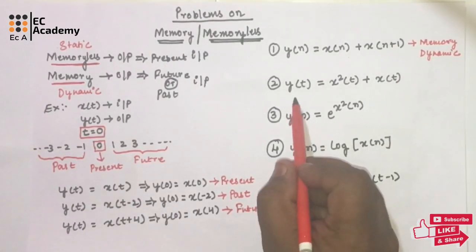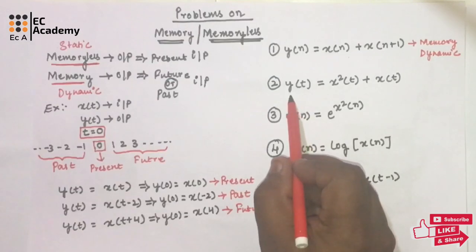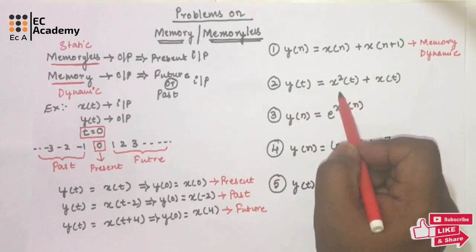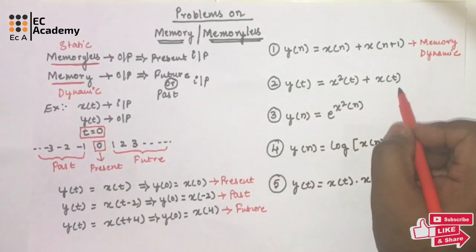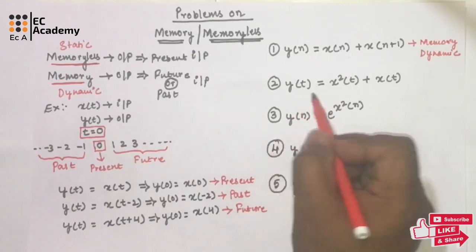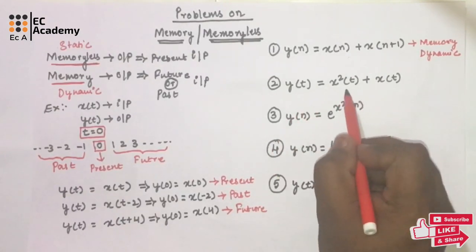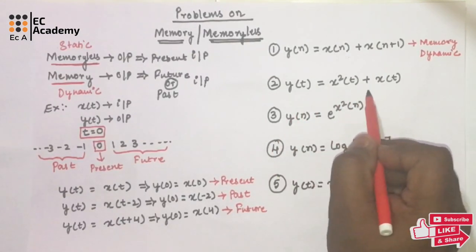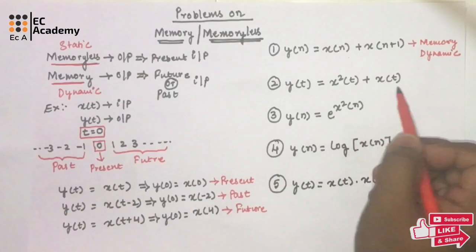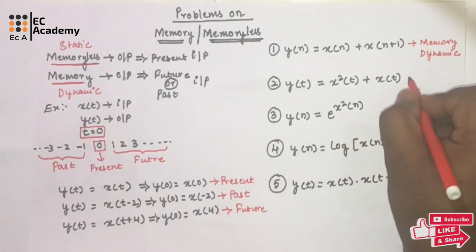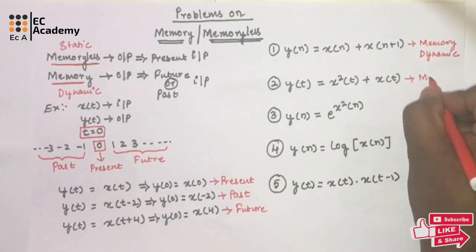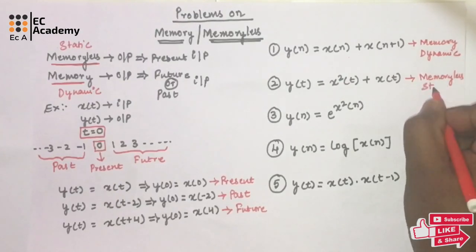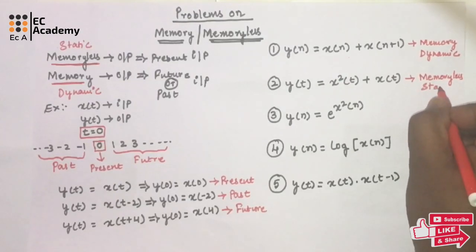Consider the second problem: y(t)=x²(t)+x(t). The output of the system depends upon only the present value of the input. Hence we can say the system is a memoryless system, or a static system.